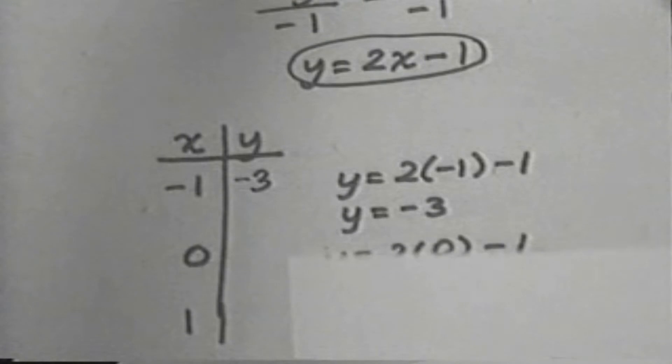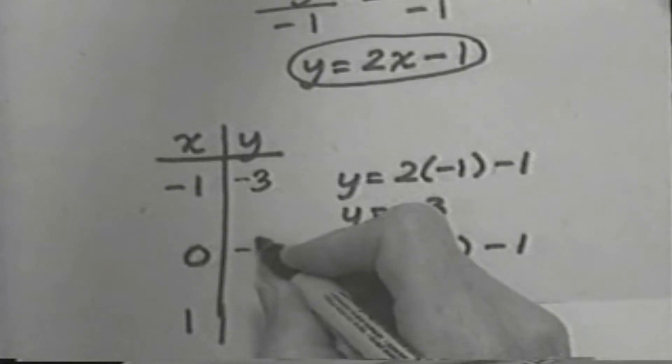Filling in 0 for x, we have y equals 2 times 0 subtract 1, which is 0 subtract 1, and that's negative 1. So when x is 0, the y works out to be negative 1.